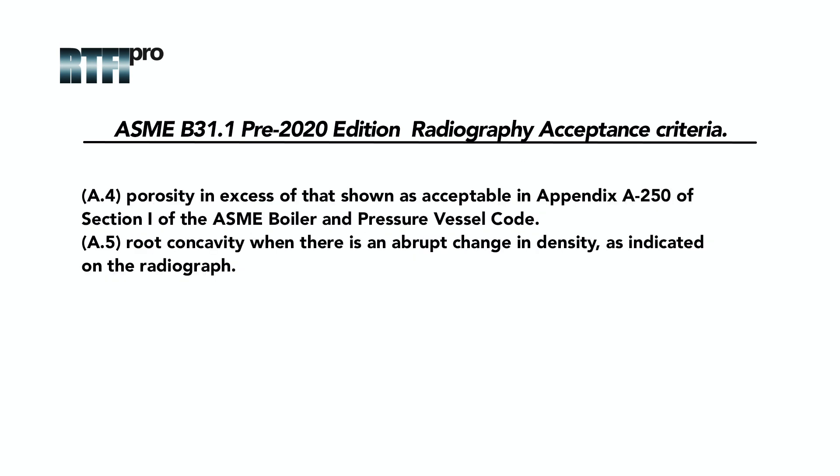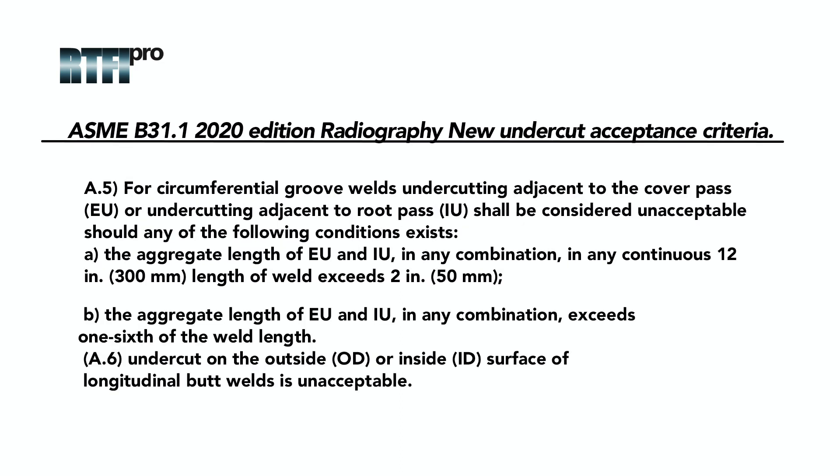A.4: Porosity in excess of that shown as acceptable in Appendix A-250 of Section 1 of the ASME Boiler and Pressure Vessel Code. A.5: Root concavity when there is an abrupt change in density as indicated on the radiograph. With this information, RTFI Pro further went to ASME and requested a code change, which was approved due to discrepancies with undercut not having any acceptance criteria for evaluation.